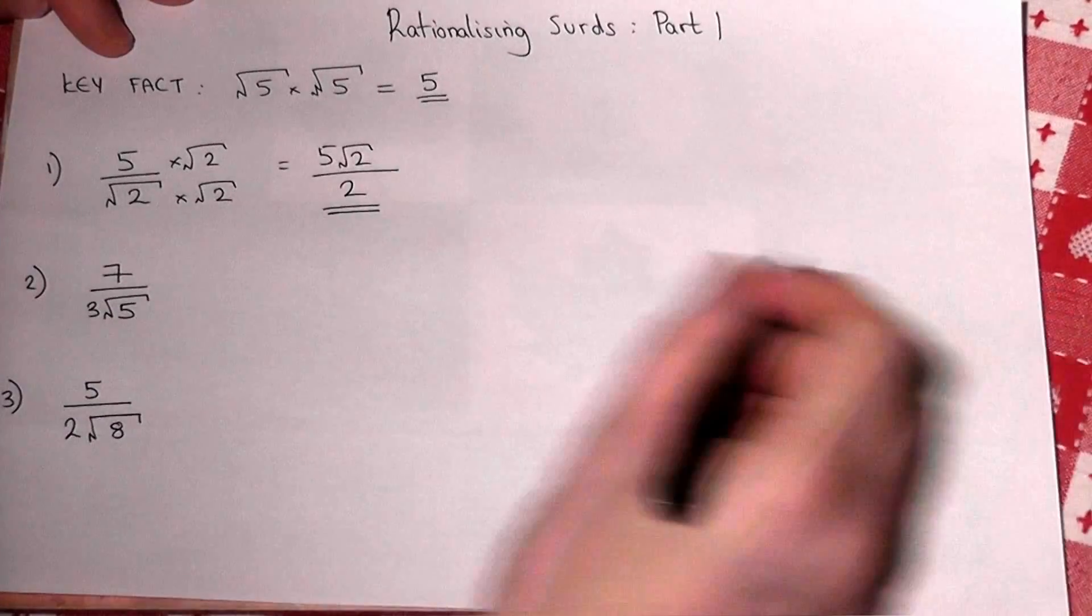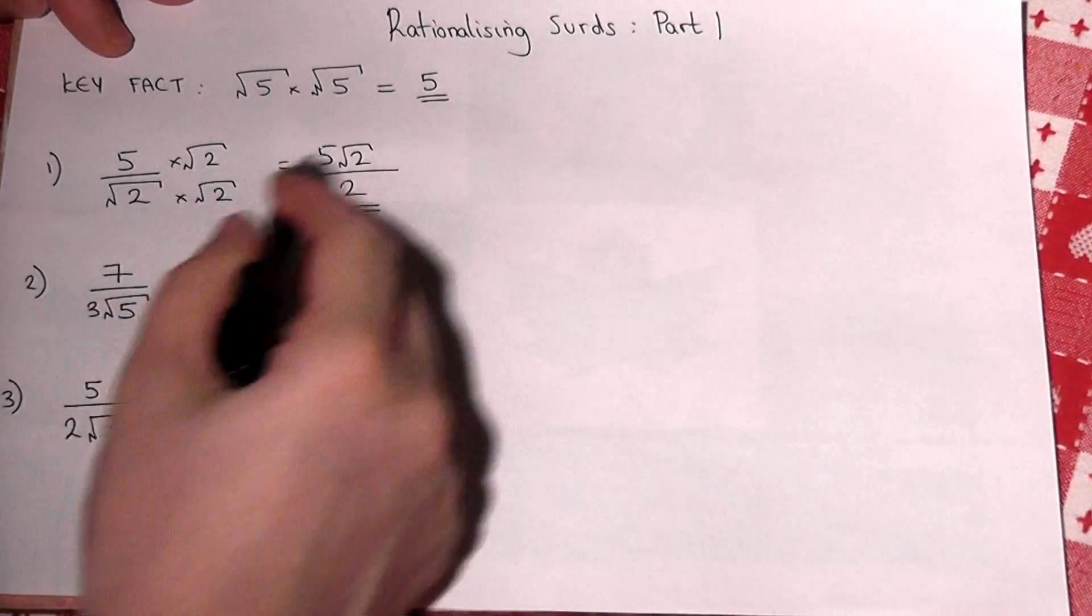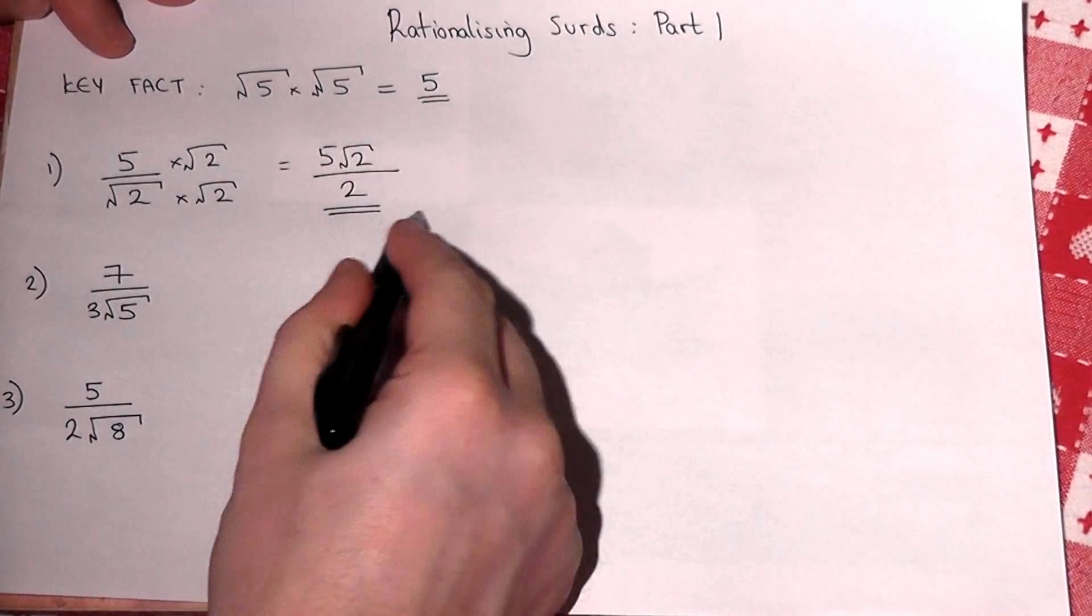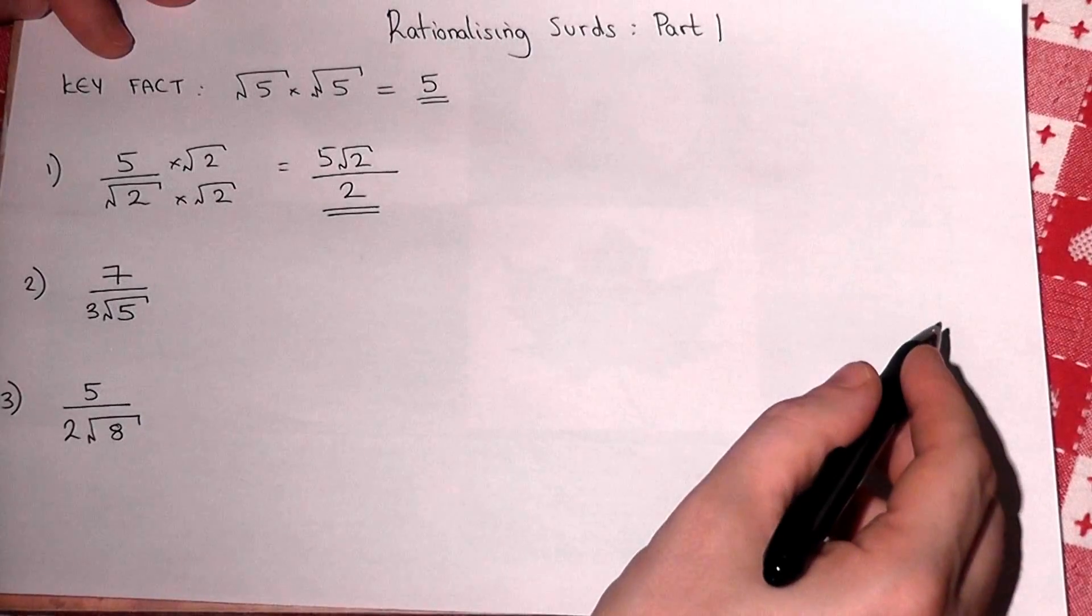So the answer, which is an equivalent fraction of the same number, has the square root on the top, which is seen to be a better form. This has therefore been what is called rationalized. So in these simple examples, you just times the top and bottom by the surd underneath.